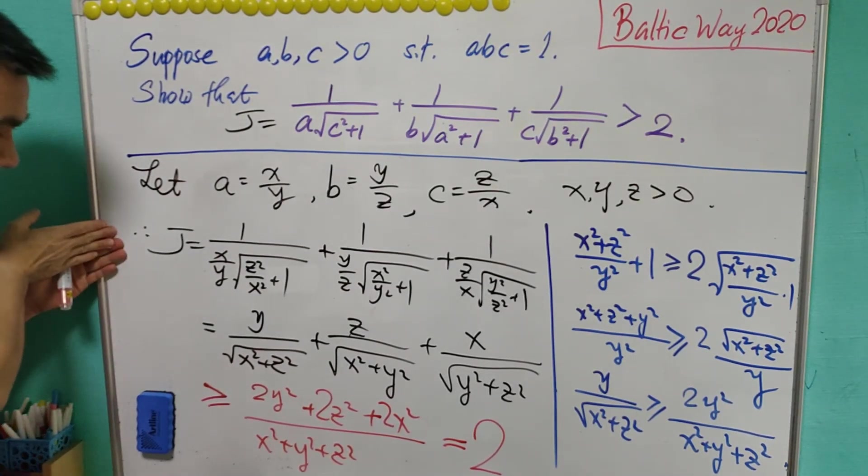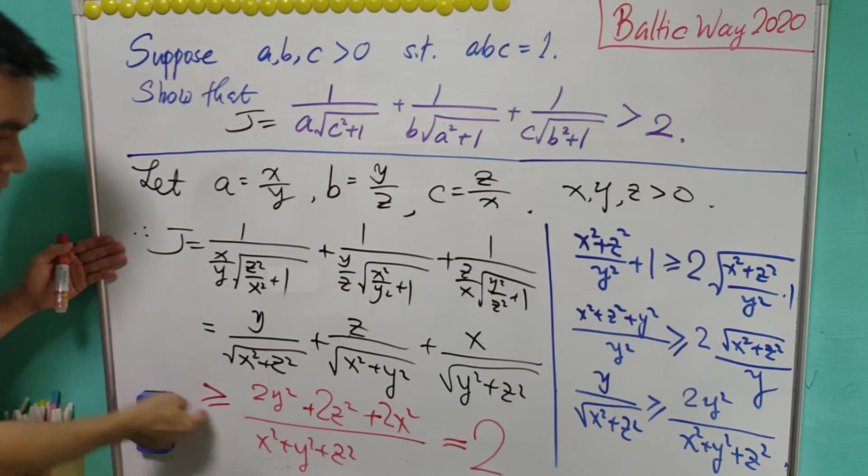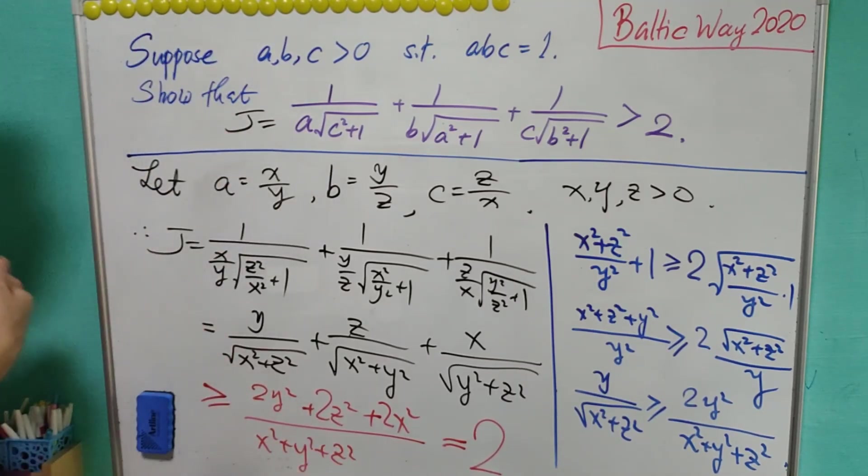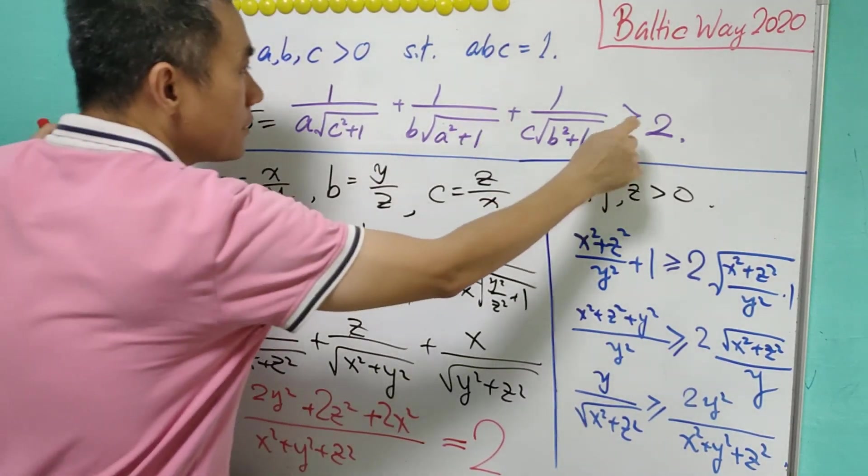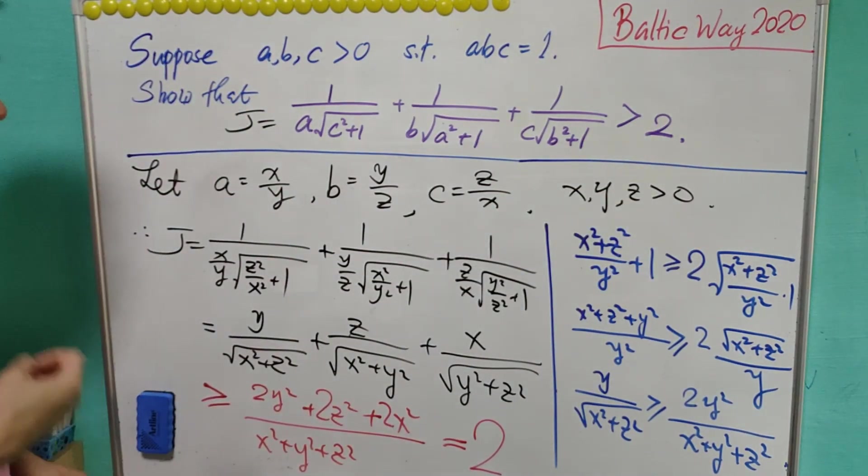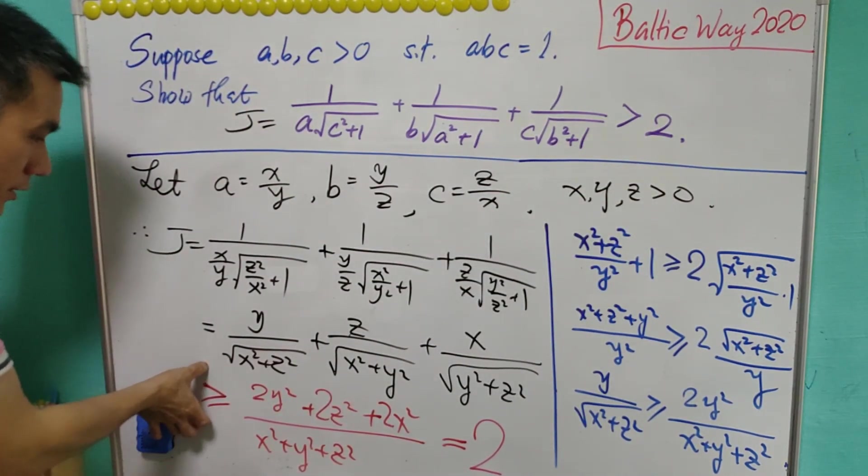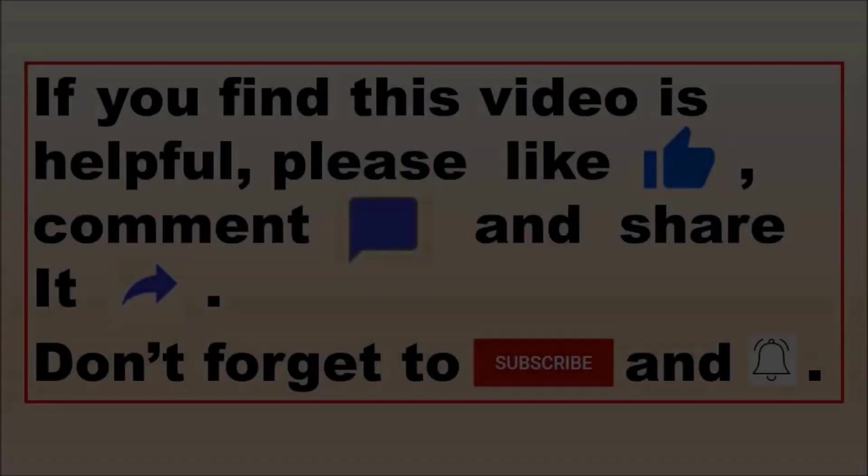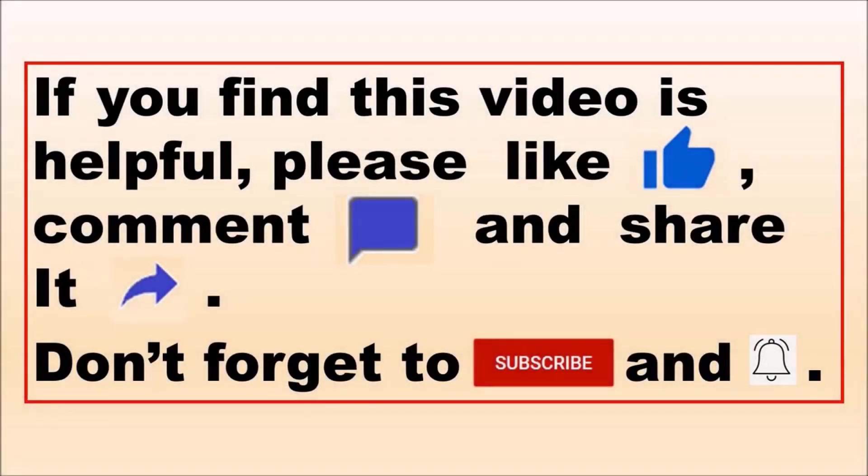And this will equal 2. So right now we show that J is greater than or equals to 2, but we are to show that it is strictly greater than 2. We need to show that the equality never holds. If you enjoy this video please like, comment and subscribe.